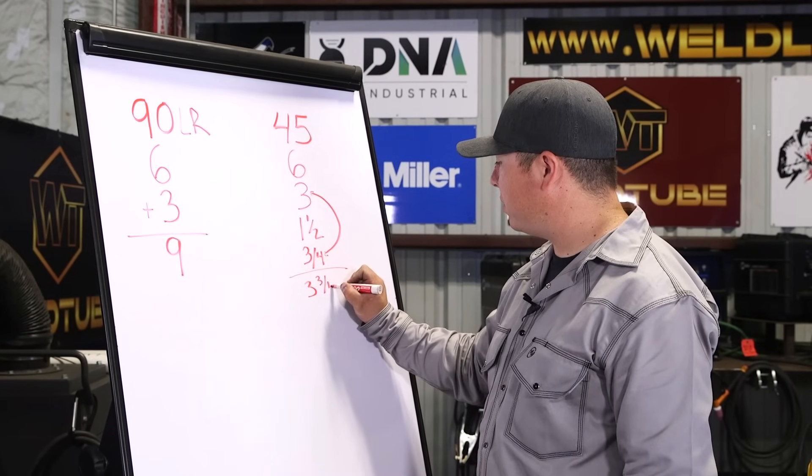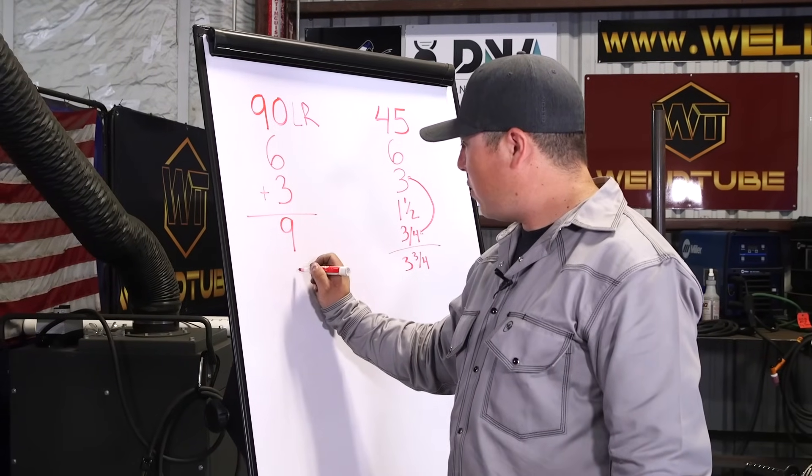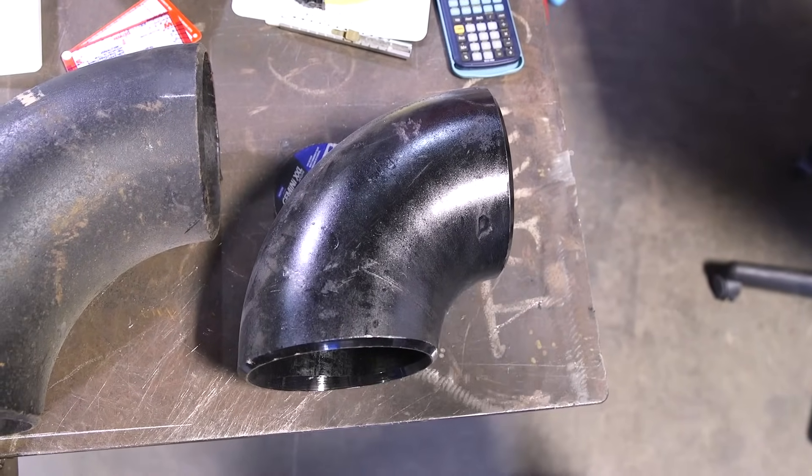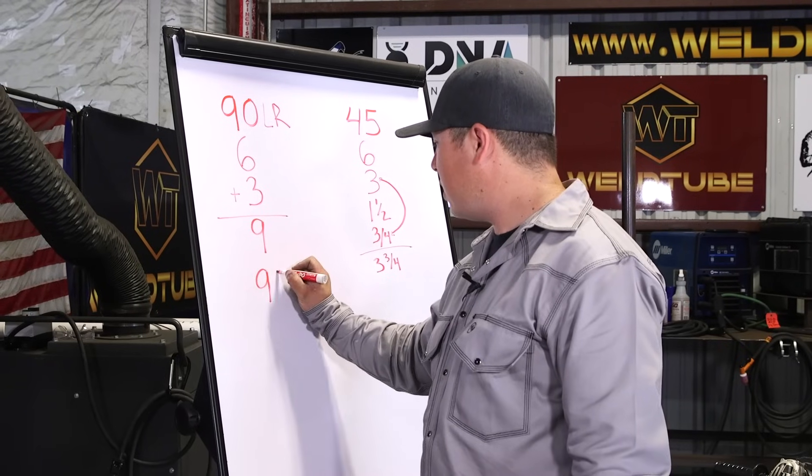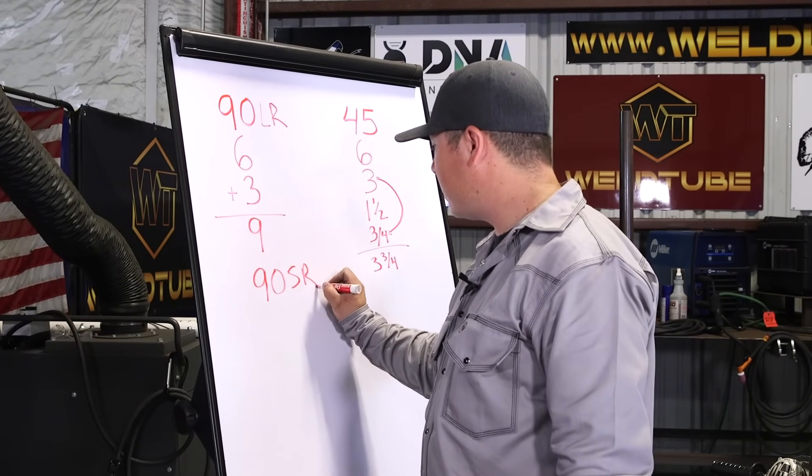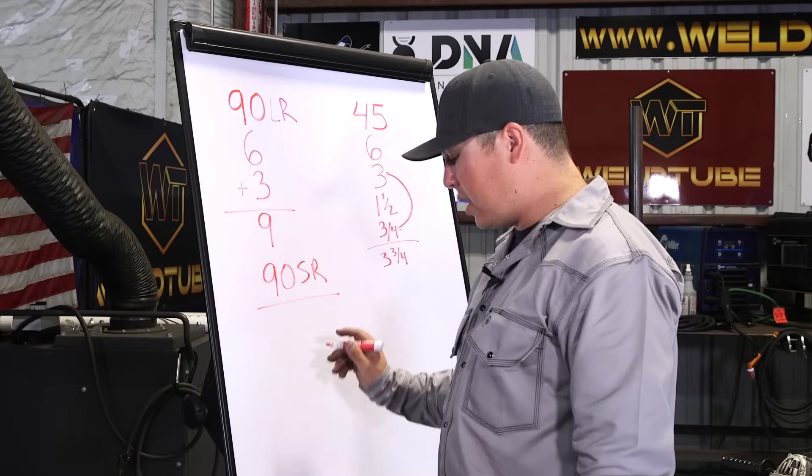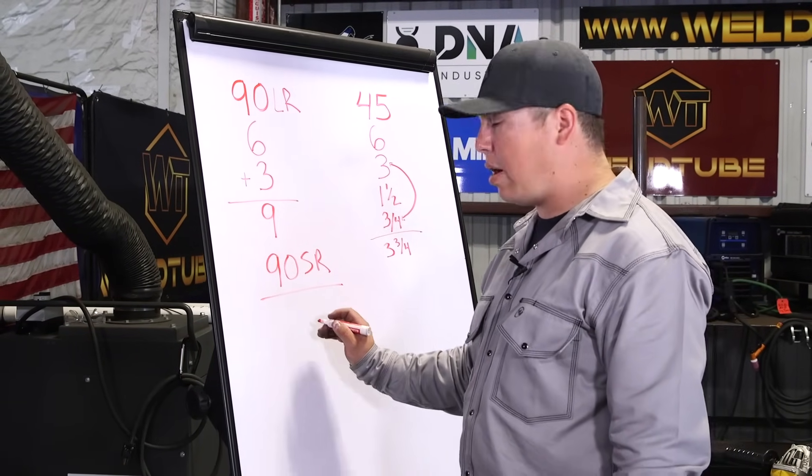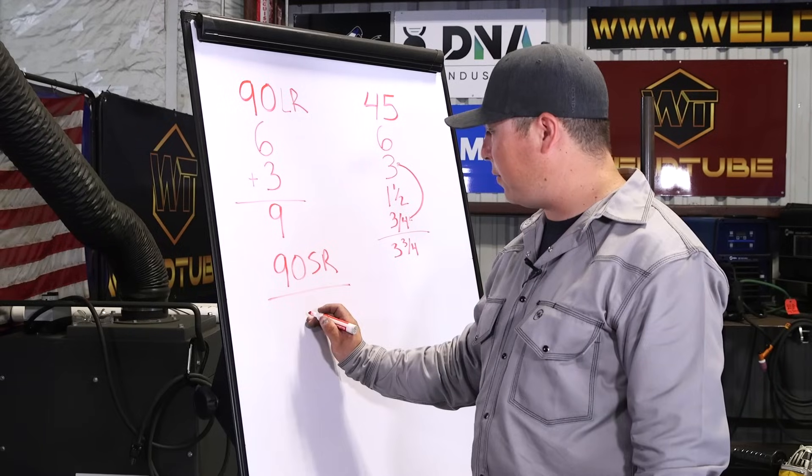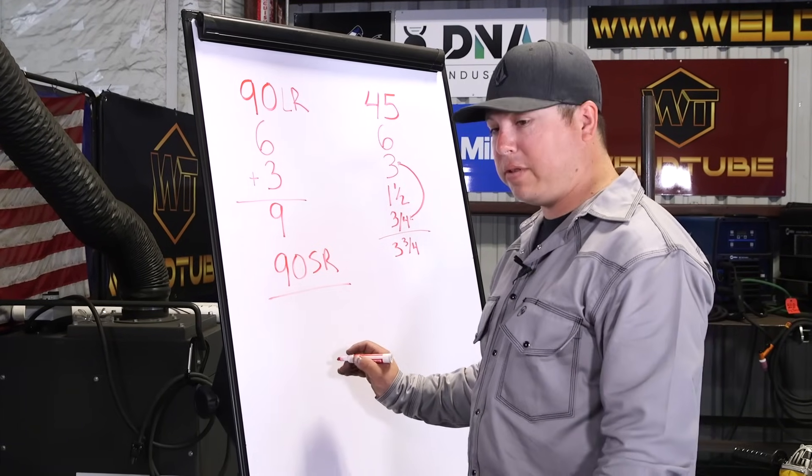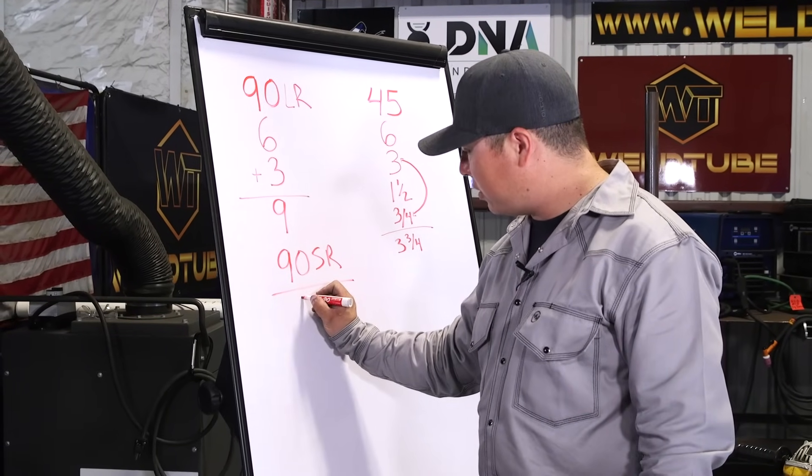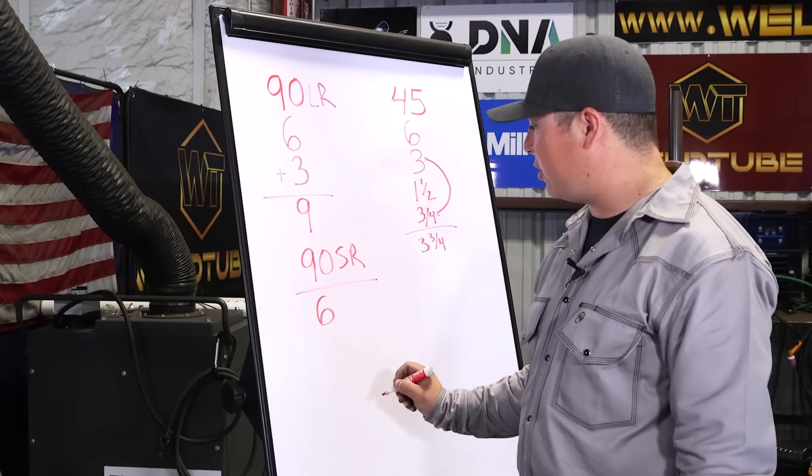Alright guys, so we have a short radius 90 as well that we showed you. The 90 short radius. And the only thing we have to do with that one is use our nominal pipe size. And that'll be our takeoff for it. So we all have 6 inch fittings here. So our takeoff for this one will be 6 inches.